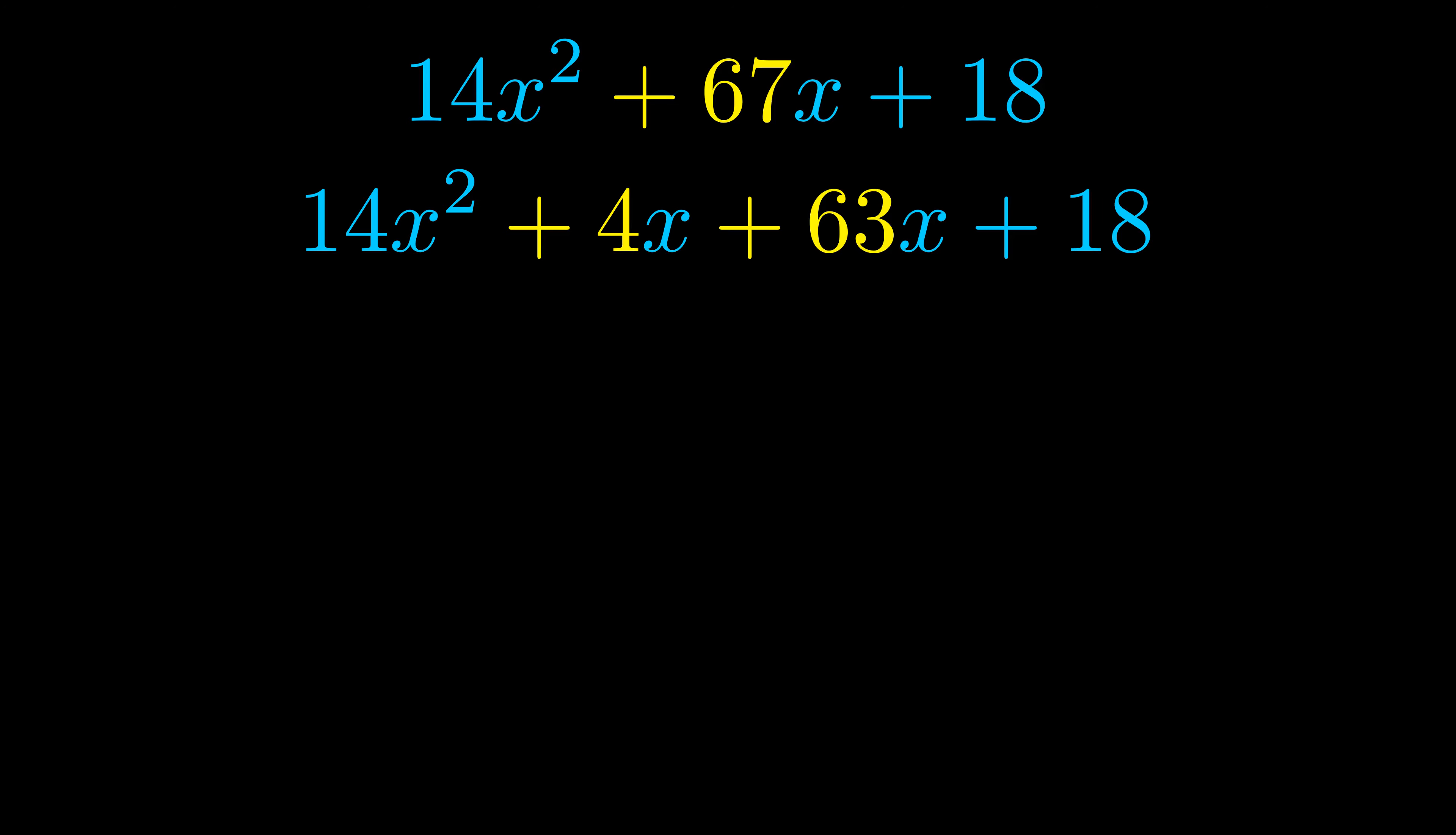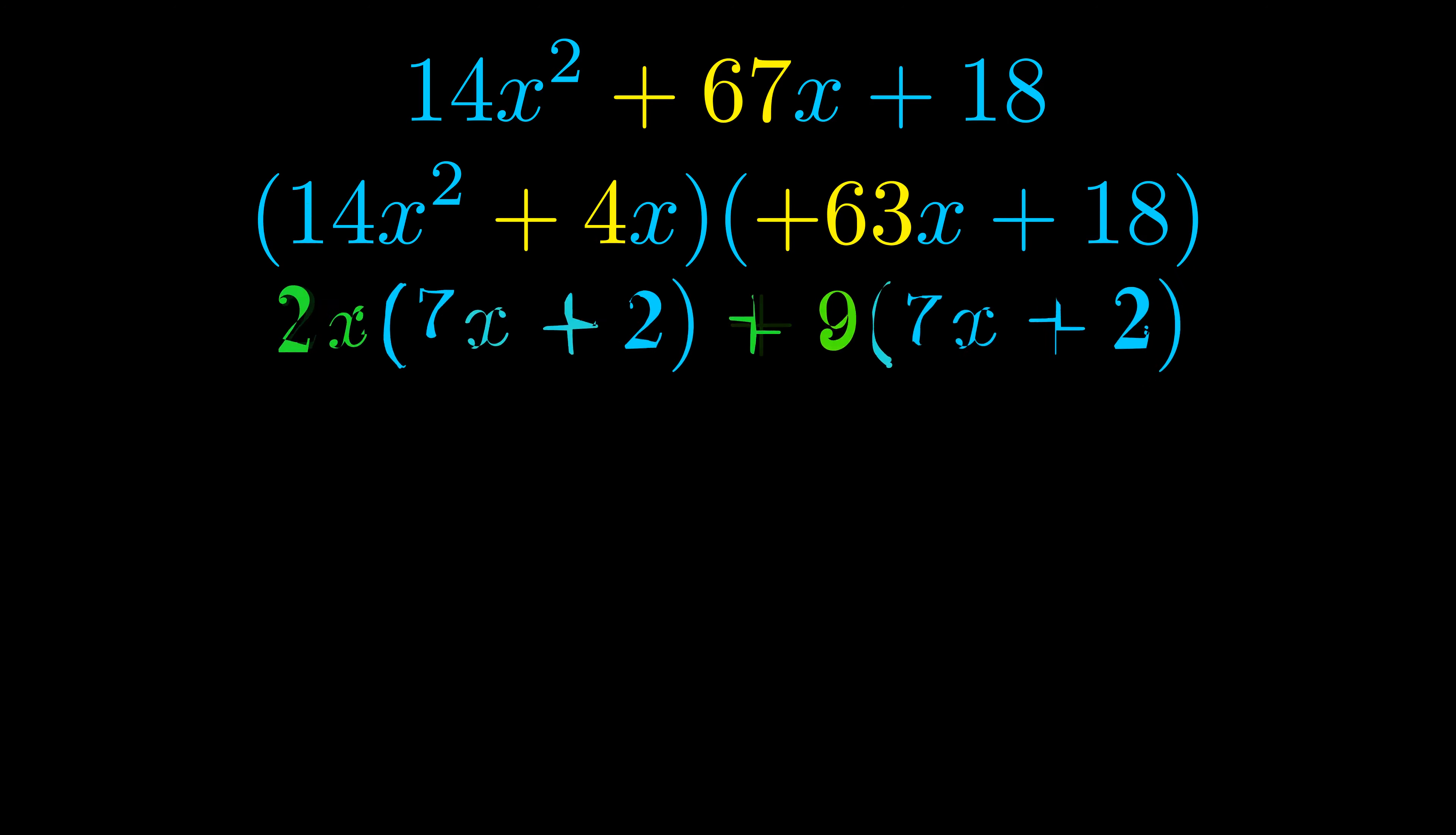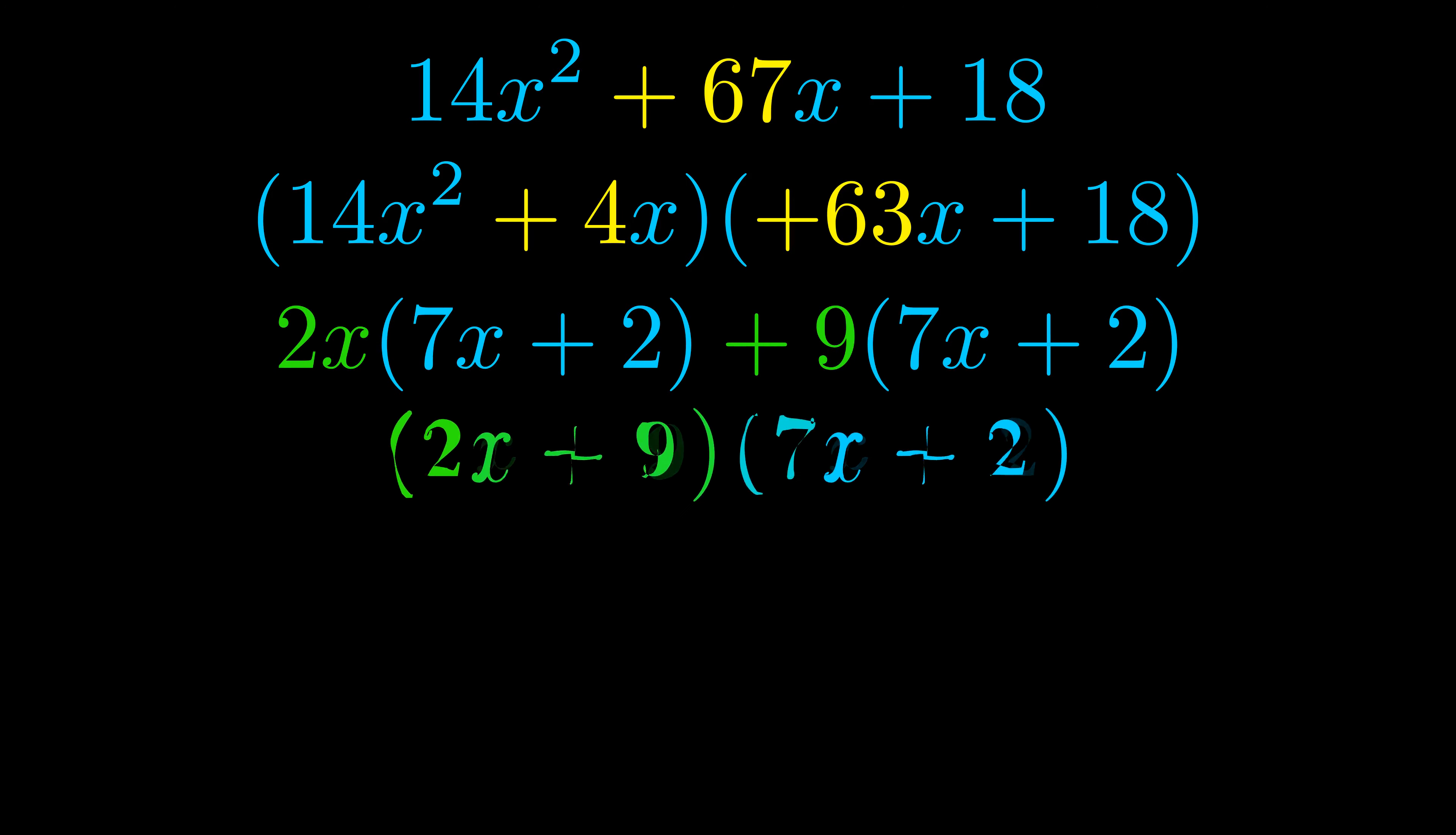Once we've done this we go ahead and put parentheses around the first term and the last term and we do that so that we can take the greatest common factor out of both terms. We can see the greatest common factor is now outside in green. Notice also how what remains inside of the parentheses is the same in both cases. The blue values are the same.